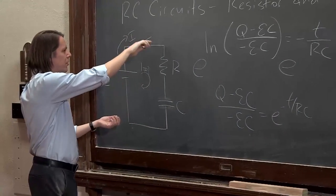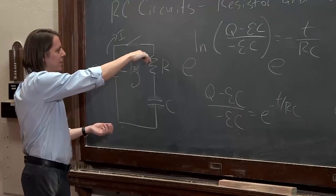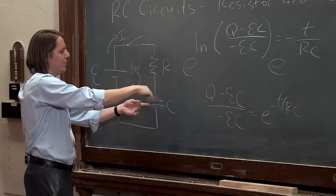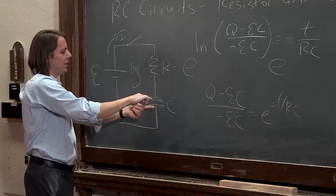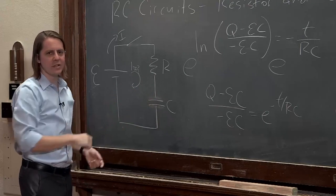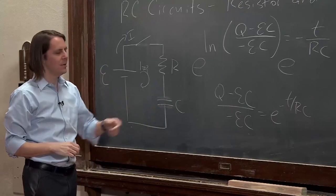You close the switch, current flows. The current is affected by the size of the resistance, but it slowly builds up charge onto the plates. And eventually, you reach a steady state value of EMF times C.